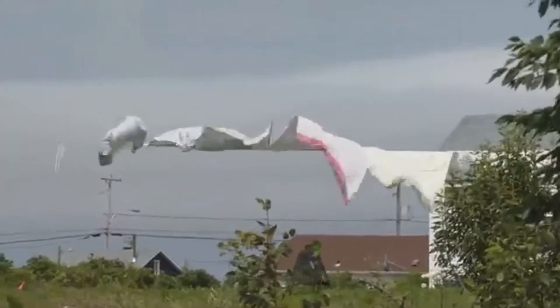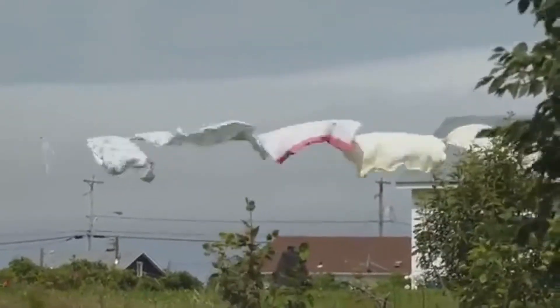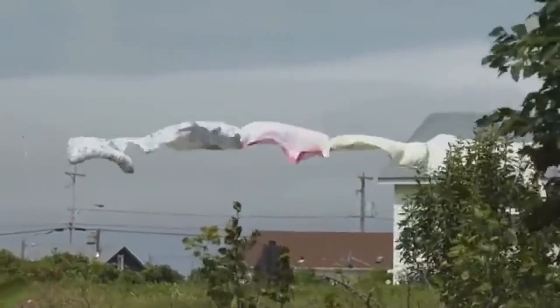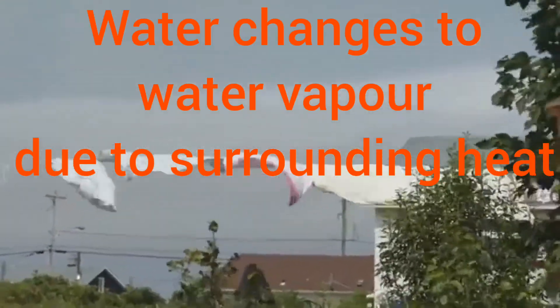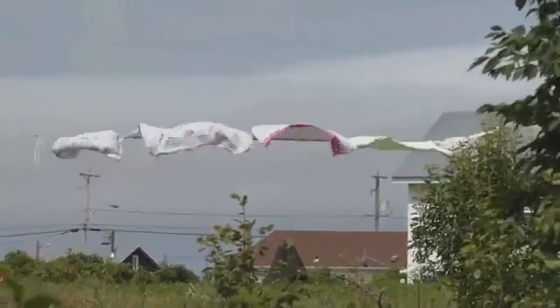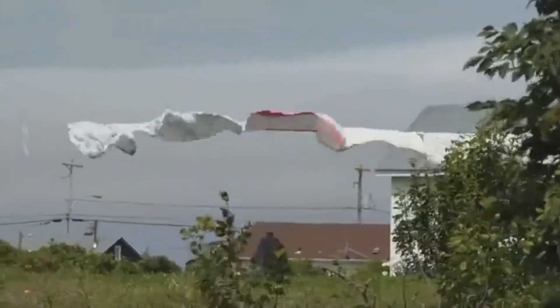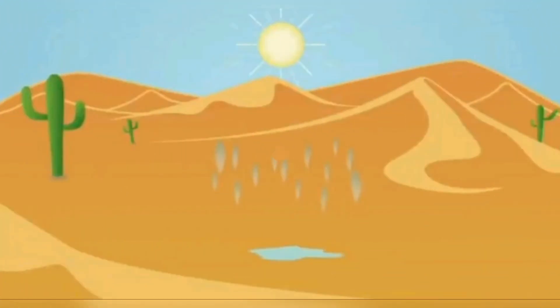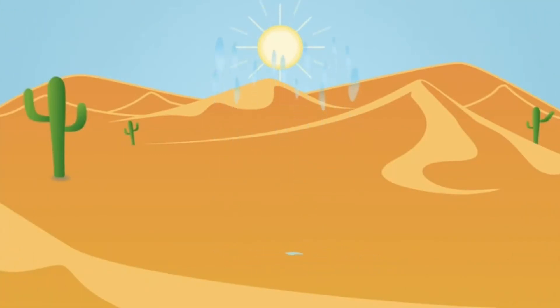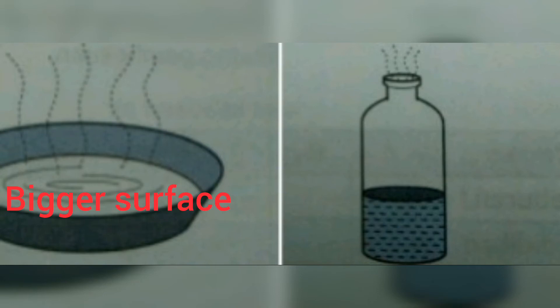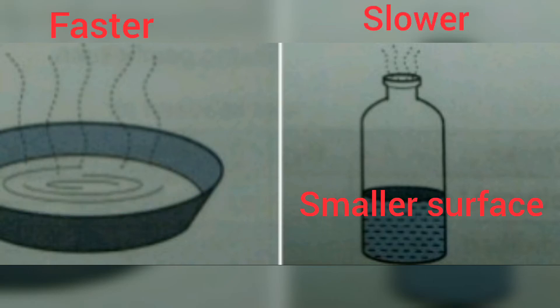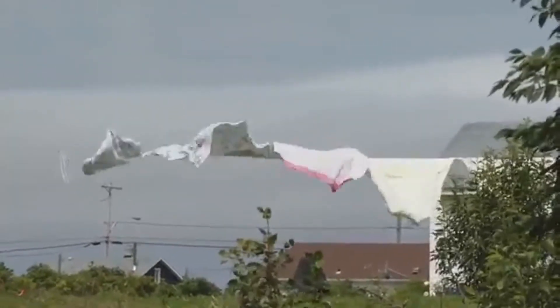Can you see the clothes swaying? This means the wind also helps the water dry faster. The process when water changes to water vapor due to surrounding heat is called evaporation. Evaporation can occur at any temperature below 100 degrees Celsius. Remember: the hotter the surrounding temperature, the bigger the surface area exposed, and the stronger the wind — the faster the evaporation.